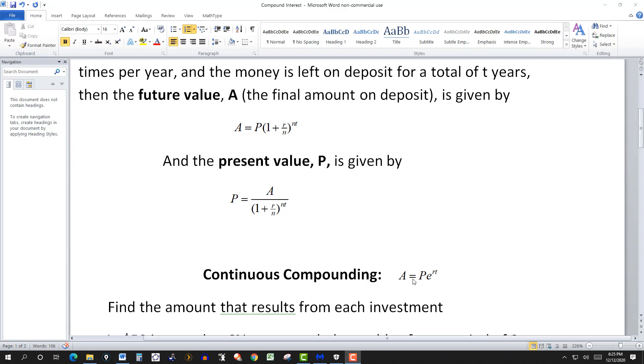More convenient to use this setup for that case. A equals the principal, or present value, times E to the RT.